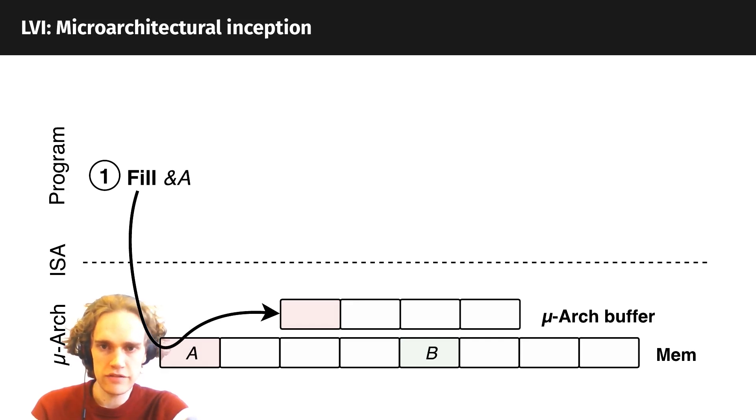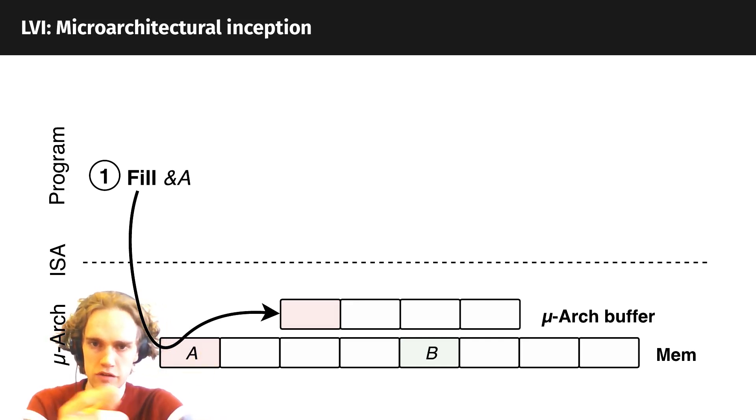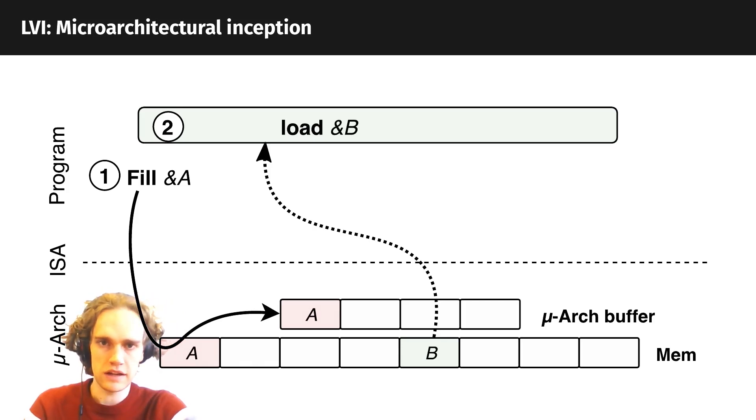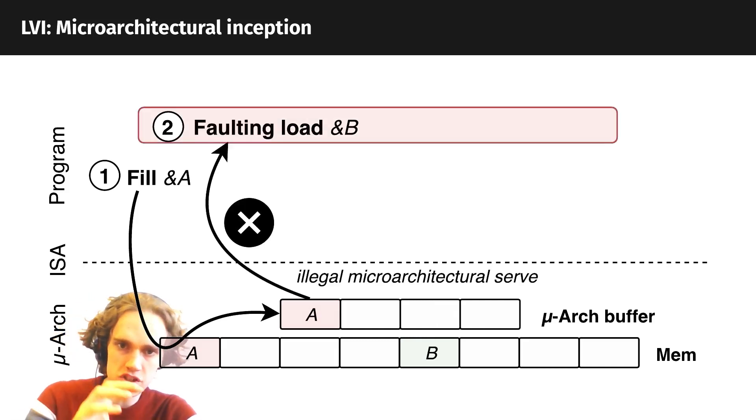Is it possible to plant a value in a microarchitectural buffer? Let's say I store a value A to address 1000 — then the store buffer contains value A to be stored at address 1000. The processor wouldn't normally let you pick up this value because it tracks the context for functional correctness. But — this is my high-level microarchitectural inception idea — the attacker plants value A into a microarchitectural buffer, then the victim executes and tries to load value B, but through our inception trick, value A gets injected instead.